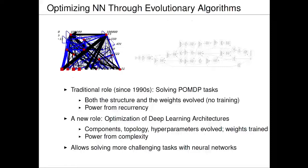Very recently, pretty much just this year, a new area has emerged in neuroevolution — the optimization of deep learning architectures. There, you use evolution to optimize the components, the hyperparameters, and the topology of the network, but you still do training with backpropagation or stochastic gradient descent. The power of this approach comes from the complexity of the architecture, combining these two mechanisms: optimization and learning. Overall, neuroevolution allows you to solve more challenging tasks with neural networks.